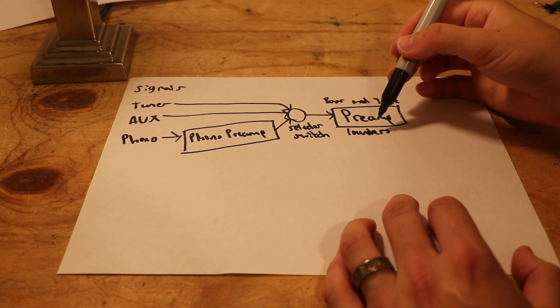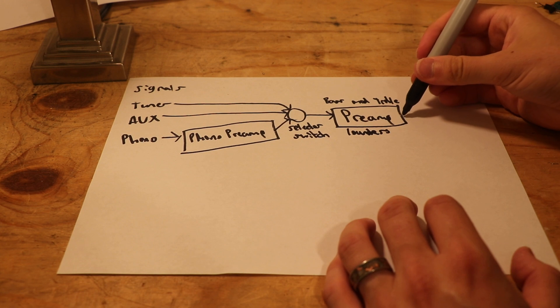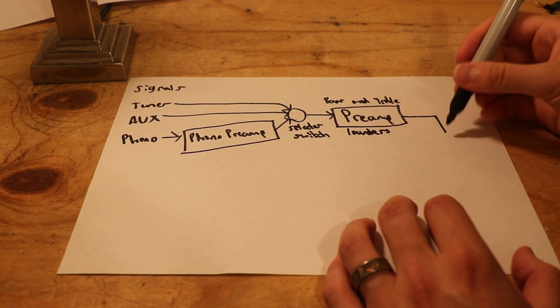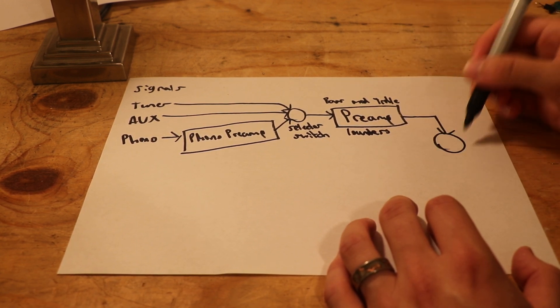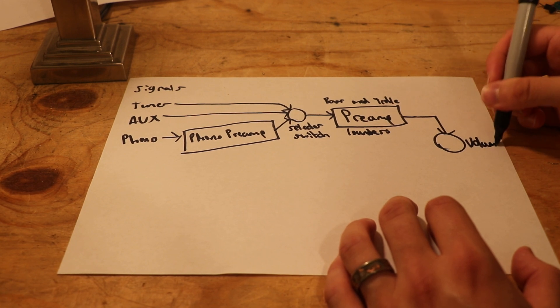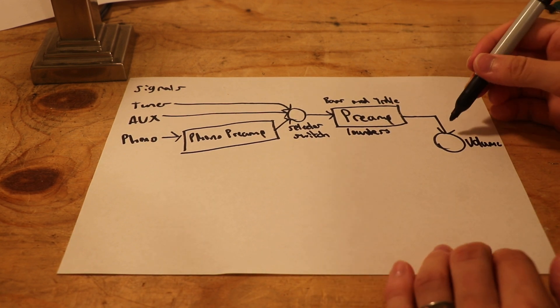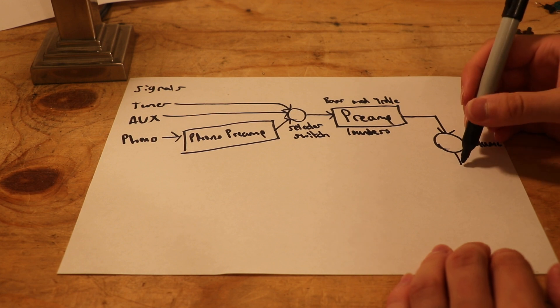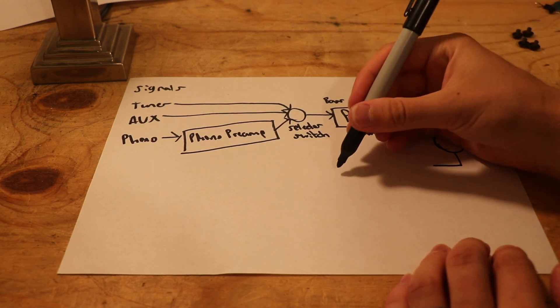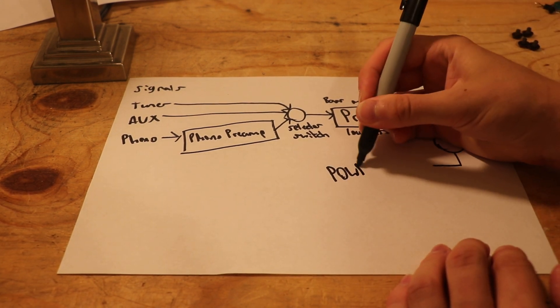Once the signal is conditioned and it's gone through the preamp, it goes to another thing. It's a potentiometer, and it is the volume potentiometer. And what that's doing is it's getting the signal ready for the power amplifier.